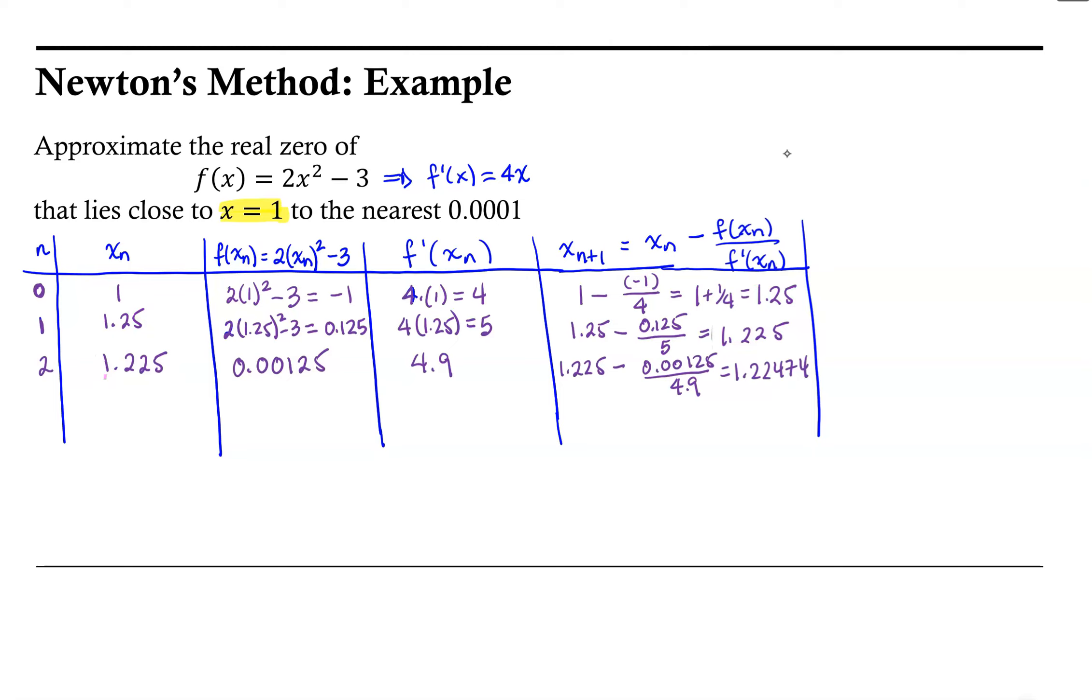And now notice that our approximation here matches with the previous approximation to two decimal places. So this is an indication that we are getting closer and closer to the real zero of the function.